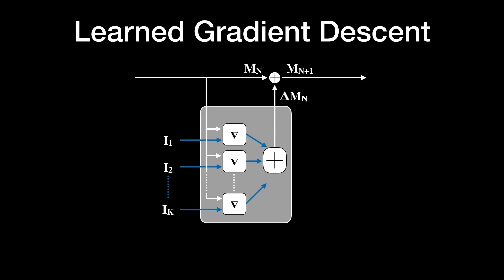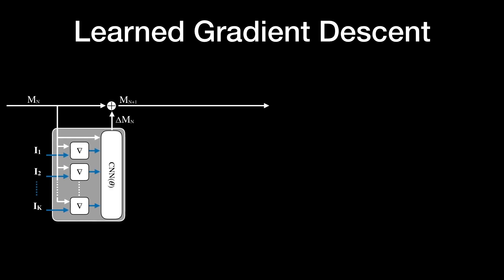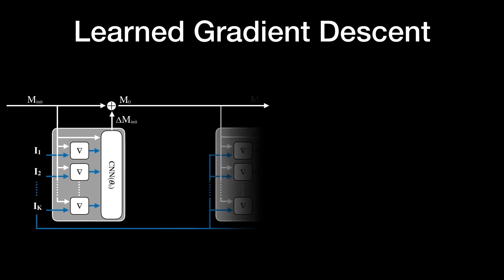This is achieved by replacing the simple gradient descent update rule with a CNN. The idea is that a CNN can learn to take larger steps than the standard gradient descent update rule, as well as reduce overfitting by constraining the generated model, in our case the MPI, to lie on the manifold of plausible scenes. We can stack these gradient computation and update blocks repeatedly, creating a form of recurrent network.